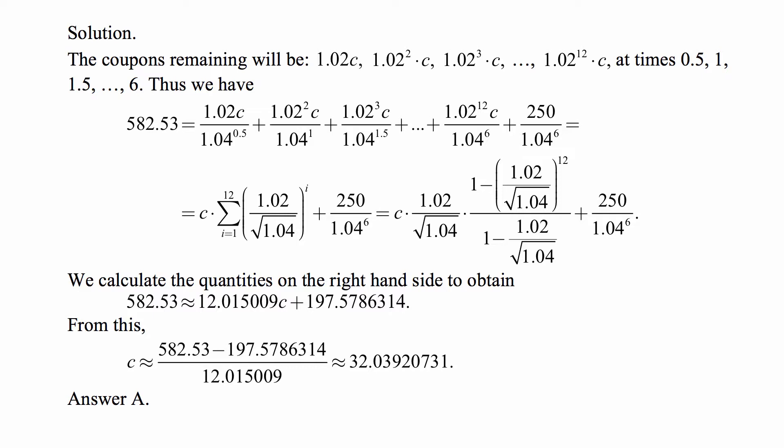I'm going to factor out 1.02/√1.04 so that it will start with 1. It will be 1 plus r (standing for the ratio) plus r² and so on. The last term will be to the 11th power: 1 + r + r² + r³ and so on, up to r¹¹. The sum like that equals (1 - r¹²)/(1 - r).